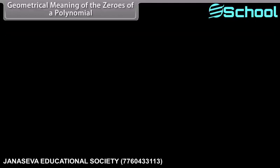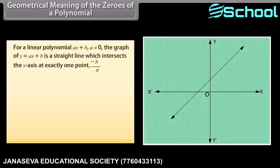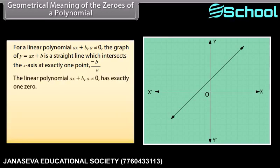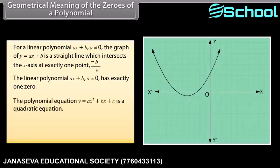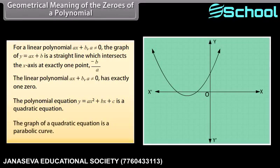Geometrical meaning of the zeros of a polynomial: For a linear polynomial ax plus b, where a is not equal to 0, the graph of y equals ax plus b is a straight line which intersects the x-axis at exactly one point, minus b upon a. Therefore, the linear polynomial ax plus b has exactly one zero. The polynomial equation y equals ax squared plus bx plus c is a quadratic equation, and its graph is a parabolic curve.